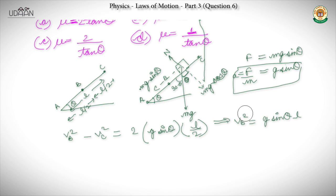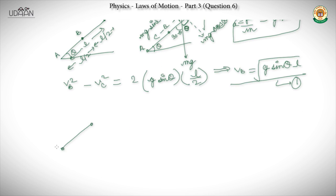Now going to the lower half, because there is friction. For this part we draw the free body diagram showing the normal force, Mg·cos θ, and Mg·sin θ.